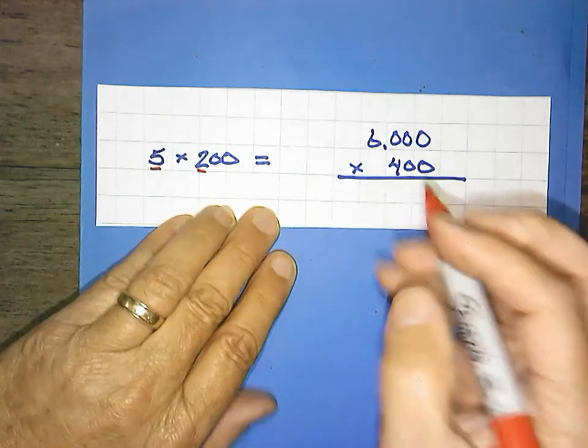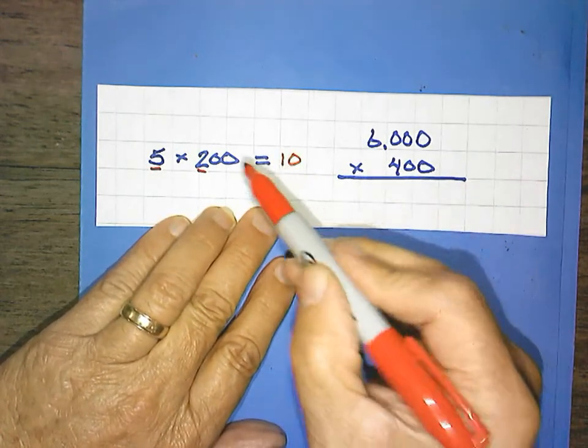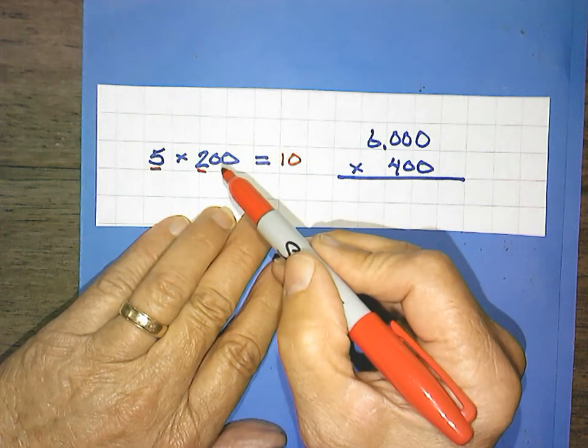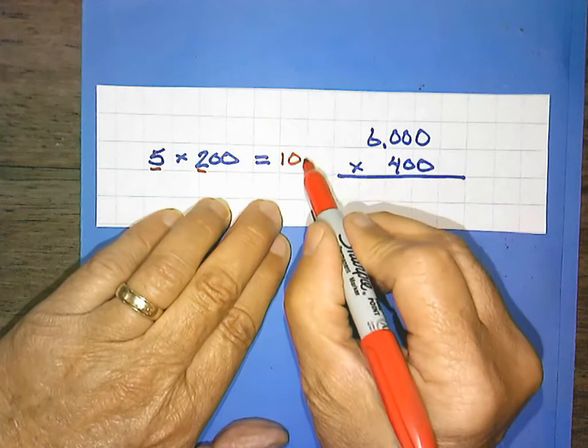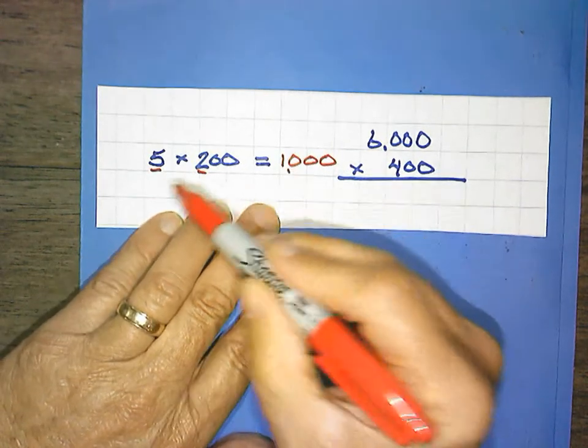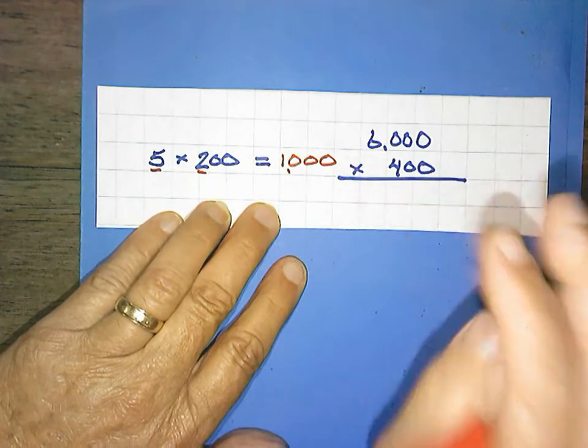5 times 2 is 10. Now, can I just count 1, 0? Or do I count both? We count both, right? 1, 2. And write 1, 2. So 5 times 200 equals 1,000.